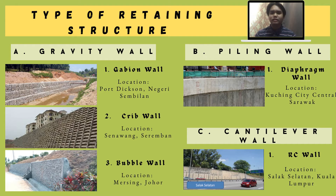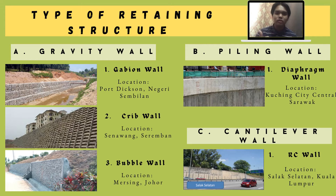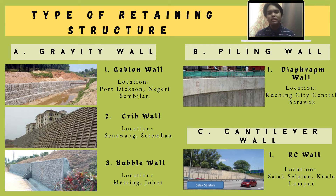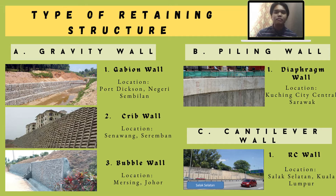Now let's move to the types of retaining structures. There are four types: gravity walls, sheet piling walls, mechanical stabilization dead walls, and cantilever walls. For gravity walls, it consists of capping walls — for example, located at Block Design 9 — grid walls at Senangong Seremban, rubber walls at Mersing Johor, and keystone walls at Lake Kuala Nubu.